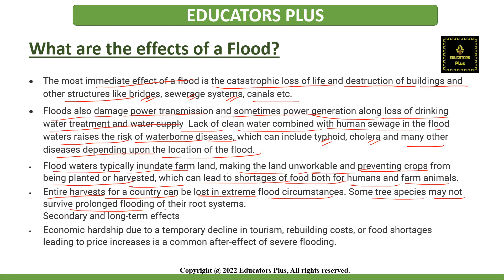Some tree species may not survive prolonged flooding of their root systems, causing secondary and long-term effects. Economic hardship — due to a temporary decline in tourism, rebuilding costs, or food shortages leading to price increases — is a common after-effect of severe flooding.